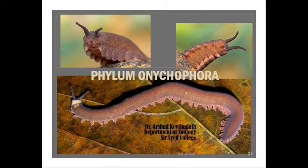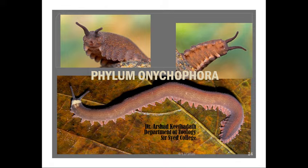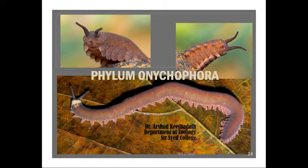Welcome to the third session under the phylum Onychophora. In this particular video, we will be discussing how phylum Onychophora or Peripatus is related with the annelids, related with the arthropods, and then with the Mollusca. The annelids and arthropods relation is more important because Peripatus or Onychophora are considered as a connecting link between Annelida and Arthropoda, as we have already discussed.